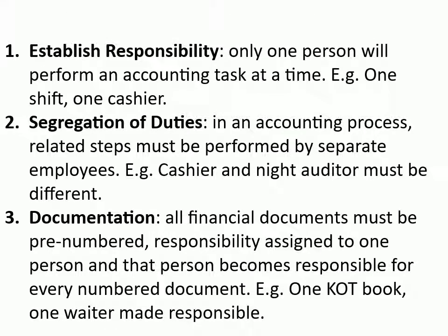Principles of internal control: First, establish responsibility — only one person will perform an accounting task at a time. For example, one shift, one cashier. Second, segregation of duties — in an accounting process, related steps must be performed by separate employees. For example, cashier and night auditor must be different. Third, documentation — all financial documents must be pre-numbered, responsibility assigned to one person, who becomes responsible for every numbered document. For example, one KOT book, one waiter made responsible.